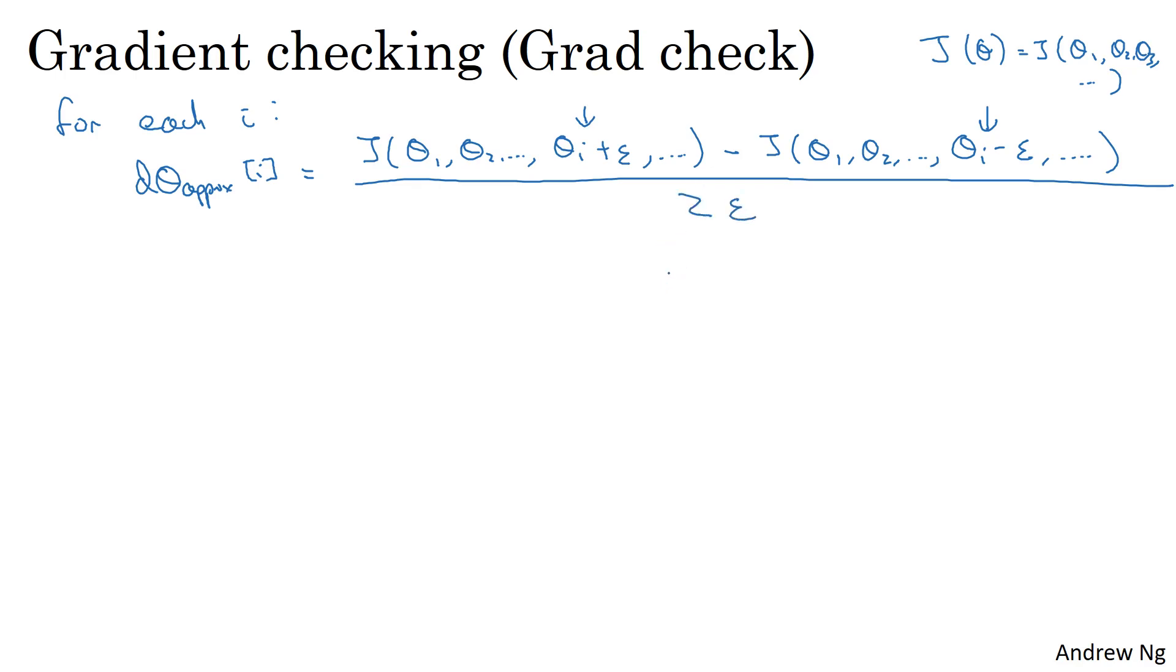And what we saw from the previous video is that this should be approximately equal to D theta i, which is supposed to be the partial derivative of J with respect to theta i. If D theta i is the derivative of the cost function J.